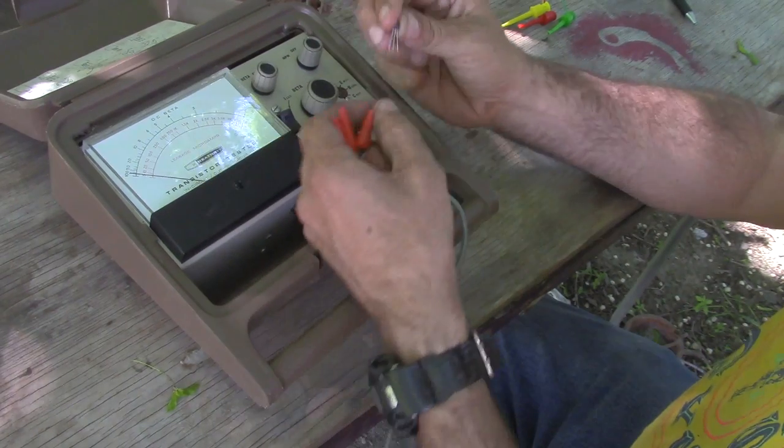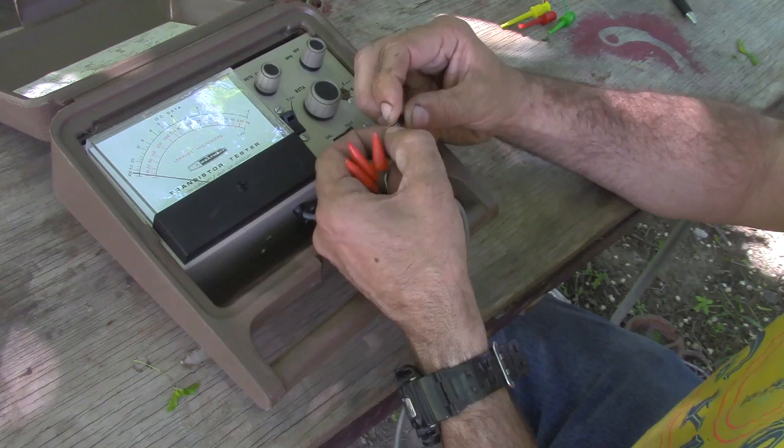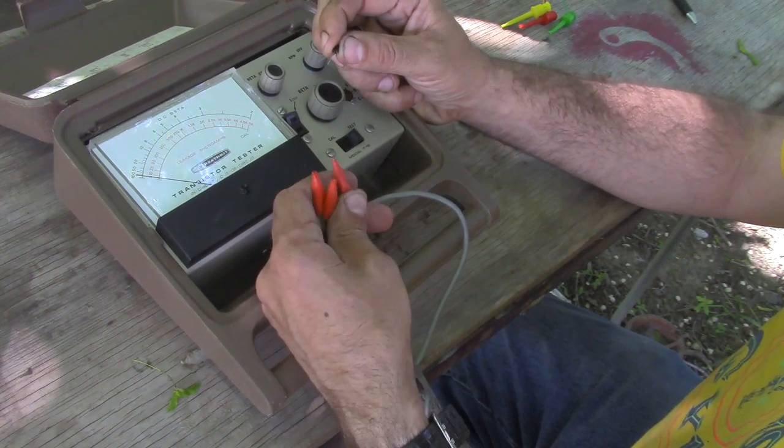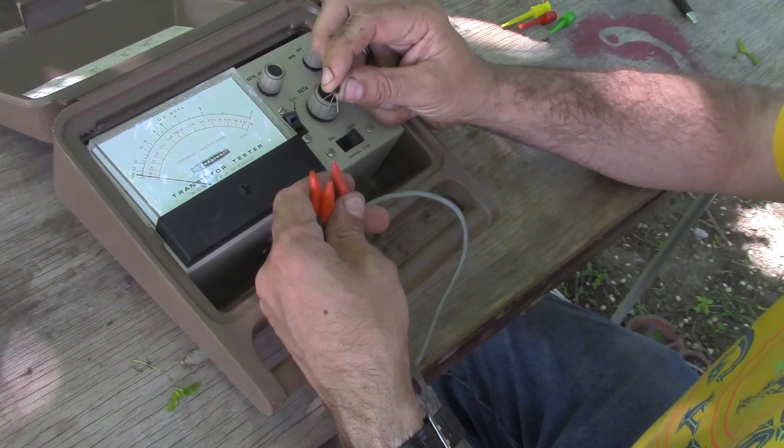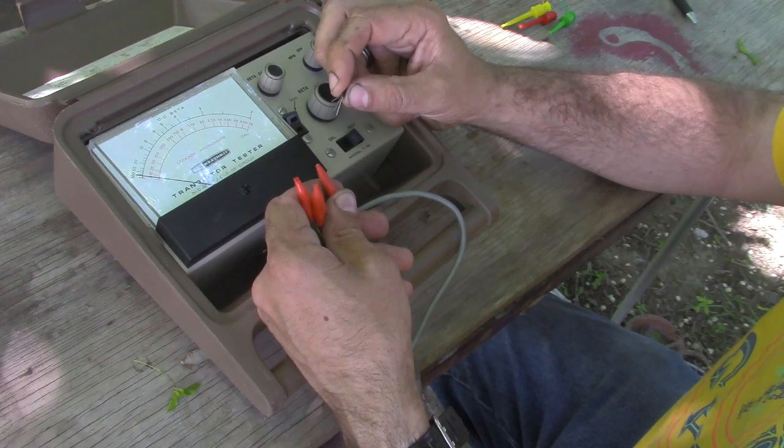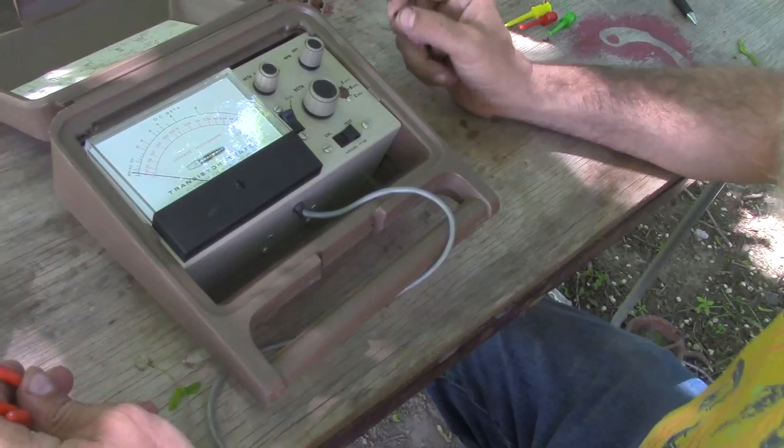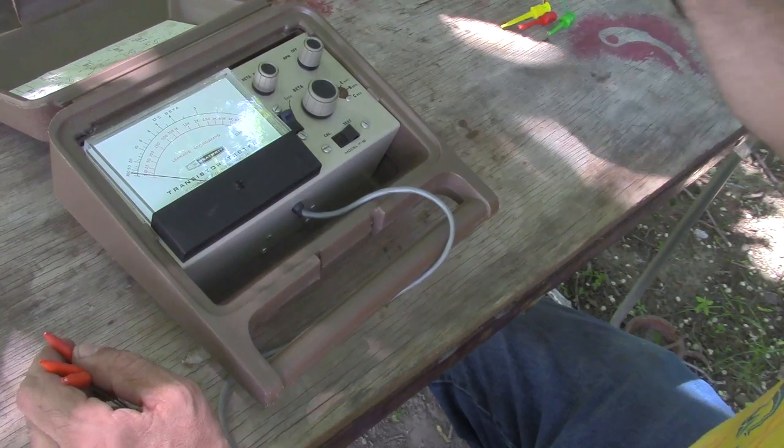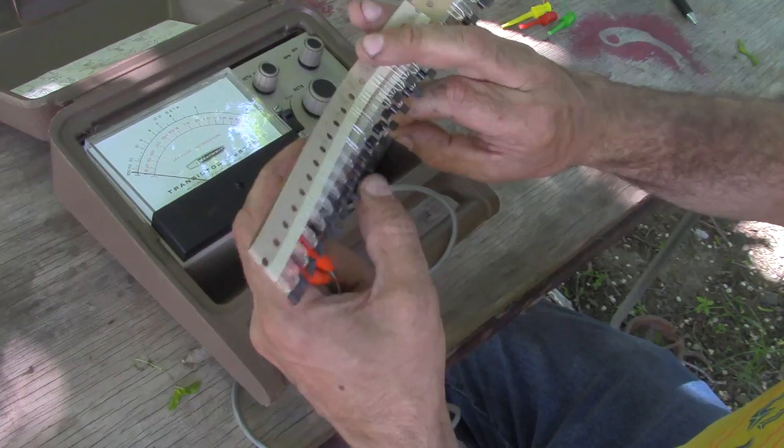You pick what type of transistor it is and you hook the leads up. A lot of transistor testers, the leads don't matter, you can figure them out. Like some of the BK transistor checkers, which I've got a couple of, work just great for this, but they don't do anything for testing transistors as far as likeness.